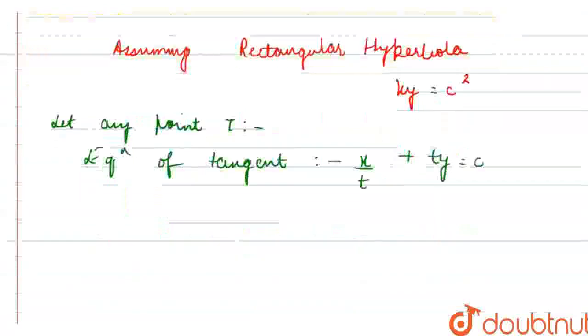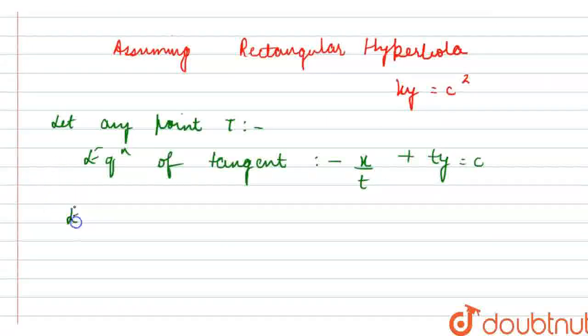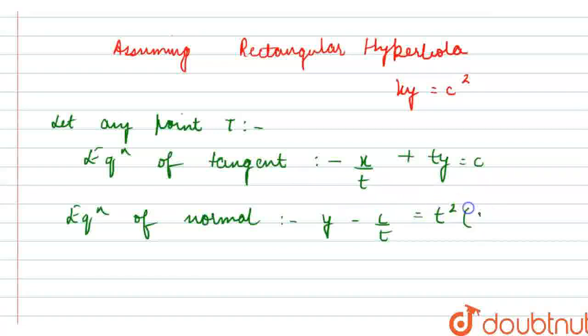And now I am also writing the equation for the normal. So, equation of normal, since normal and tangents are perpendicular, the equation would be y minus c upon t is equal to t square into x minus ct.